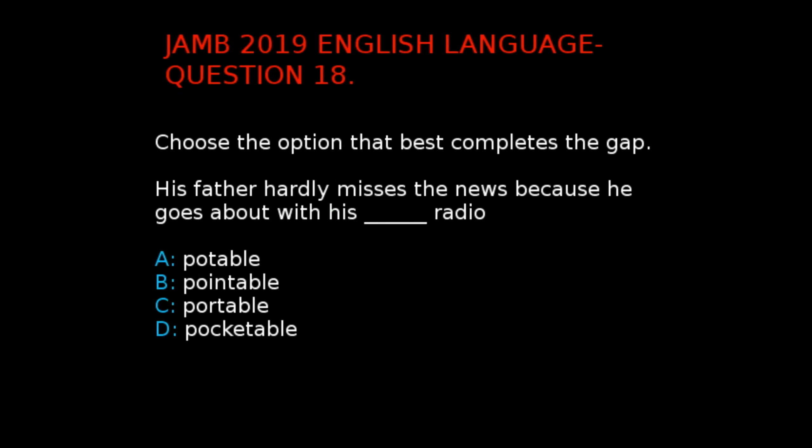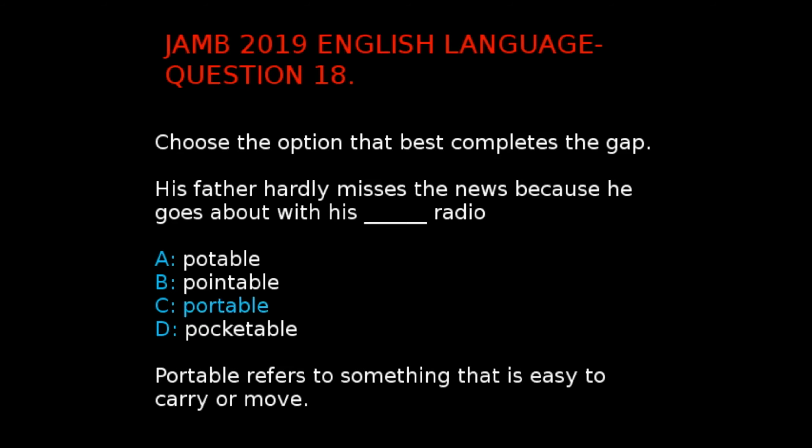Jan 2019 English Language Question 18. The question says, choose the option that best completes the gap: 'His father hardly misses the news because he goes about with his dash radio.' The options are: A. Portable, B. Pointable, C. Portable, D. Pocketable. The correct answer is C. Portable. This is because portable refers to something that is easy to carry or move — something usually small and not difficult to carry.